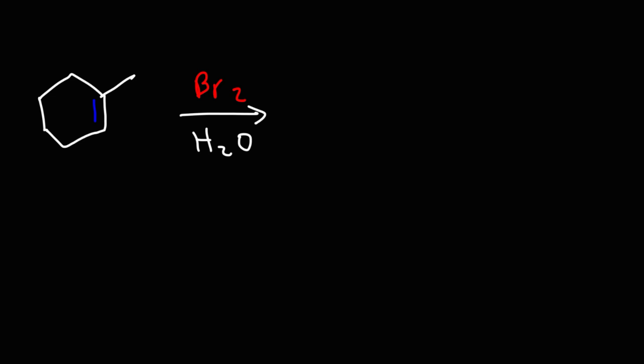Now we need to focus on the carbon atoms that are part of the double bond. We have a secondary carbon and a tertiary carbon. The question is, where should we put the hydroxyl group and where should we put the bromine atom? The hydroxyl group is going to go on the more substituted double bonded carbon atom. So it's going to go on the tertiary carbon. The bromine is going to go on the secondary carbon.